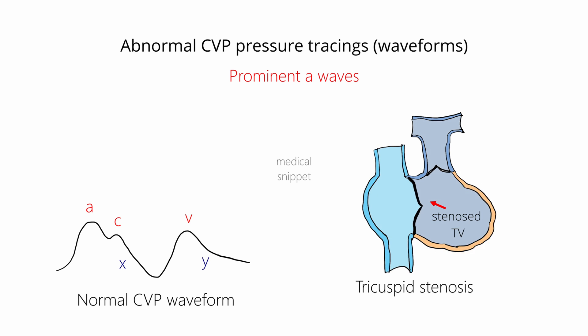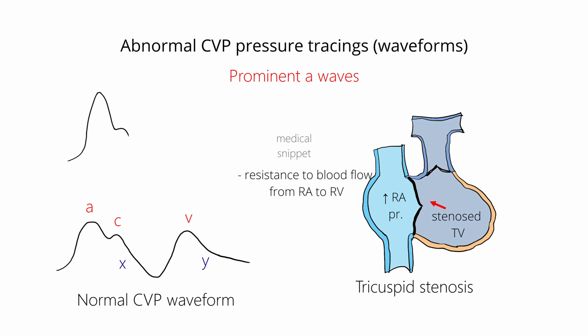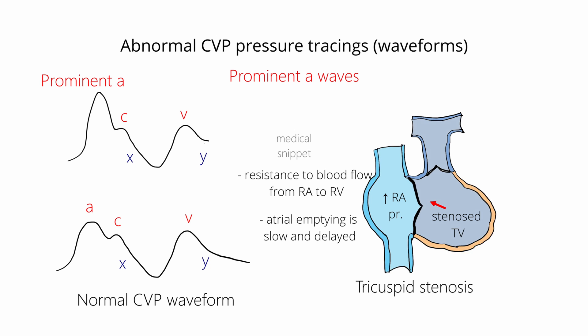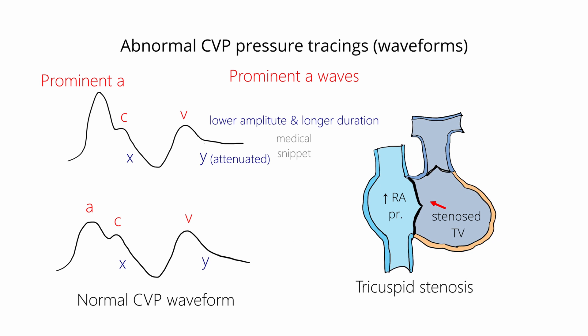In tricuspid stenosis, there is increased resistance to blood flow from the right atrium to the ventricle. So during atrial contraction, the pressure increases more and causes a prominent A wave. The passive atrial emptying is also slow and delayed due to the tricuspid stenosis, so the Y descent is of lower amplitude and longer duration — in other words, the Y descent is attenuated. Other causes of prominent A wave include any pathology that decreases right ventricular compliance, like pulmonary stenosis and pulmonary hypertension.